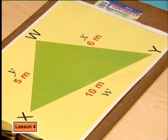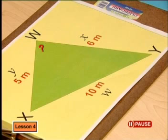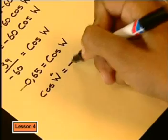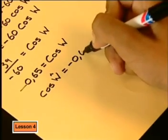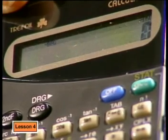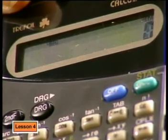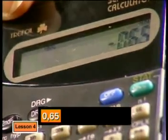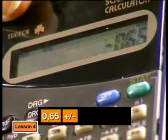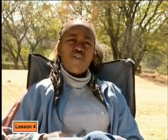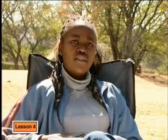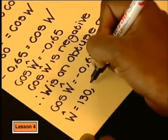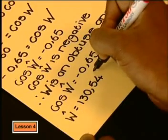But how do we work out a negative angle? Remember, cosine is negative for obtuse angles. Have a look at angle W — it's obtuse, so we can expect a negative value. Fortunately, your calculator will deal with this. To find W when we have cos W, we must use the inverse cos key on the calculator. Put in 0.65, make it negative with the negative key, then the inverse key, then cos. Rounded to two decimal places, the answer is about 130.54 degrees — and that's an obtuse angle, just as expected.